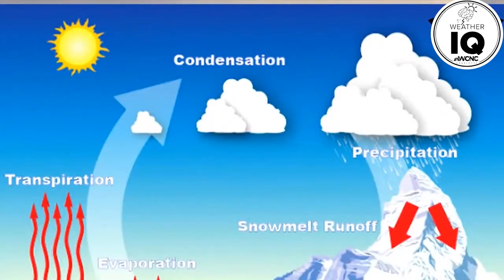So the main three aspects of the water cycle are: one, evaporation; number two, condensation; and three, precipitation.